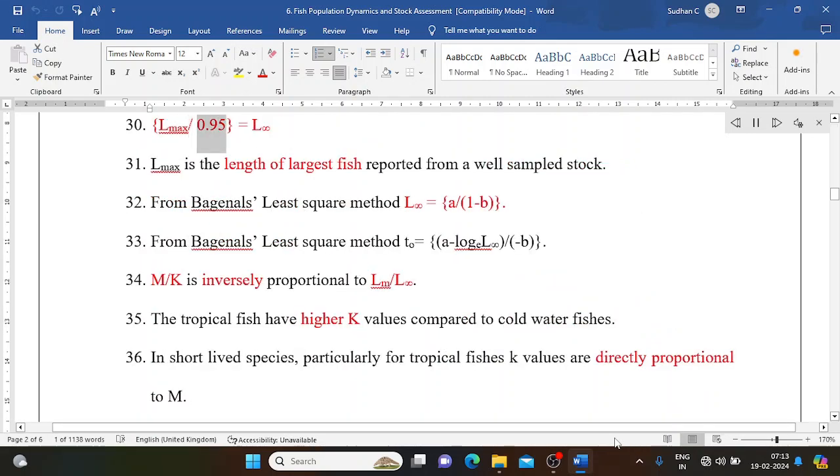L max/0.95 equals L infinity. L max is the length of largest fish reported from a well-sampled stock. From Beverton's least square method, L infinity equals a/(1-b). From Beverton's least square method, t0 equals a, log L infinity/b. M/K is inversely proportional to Lm/L infinity. The tropical fish have higher K values compared to cold water fishes.